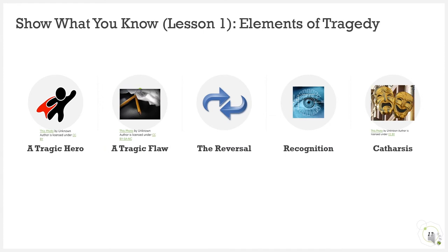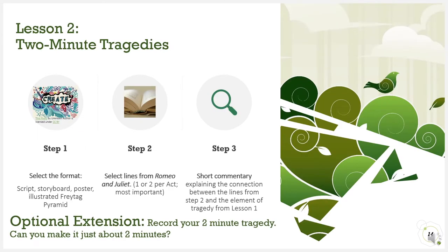For Show What You Know, Lesson 1, respond to this prompt: In a brief response, argue which element of a tragedy is strongest in Romeo and Juliet. Also argue which element is the hardest to support in Romeo and Juliet. You may use text evidence from all five acts to support your answer. In Lesson 2, you will be asked to create a two-minute tragedy. This is a great way for you to show that you understand the development of plot and character as well as the major themes in Romeo and Juliet. In Step 1, you'll select the format. In Step 2, you'll select key lines from Romeo and Juliet that are most important. And in Step 3, you'll create a short commentary connecting the lines you chose in Step 2 to the element of tragedy from Lesson 1. As an optional extension, you may record your two-minute tragedy and see if you can make it just two minutes.